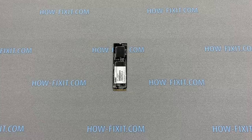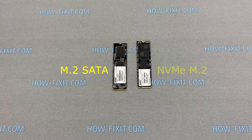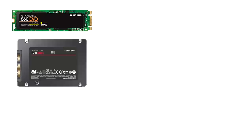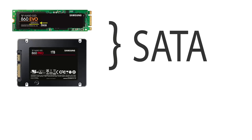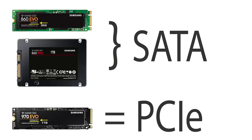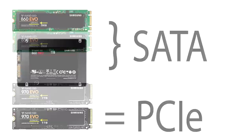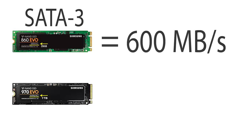Now let's look at the types of M.2 drives. M.2 storage can be SATA or NVMe type. What's the difference between M.2 SATA and M.2 NVMe? SATA M.2 SSD and a 2.5-inch SSD have the same specifications. M.2 NVMe works on the PCIe bus and has completely different speeds, much higher than the SATA bus. For example, modern motherboards use SATA 3 with a maximum speed of 600 MB/s, while an NVMe drive provides write speeds up to 3500 MB/s.